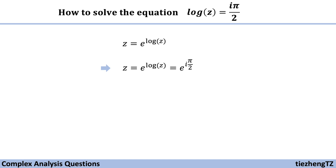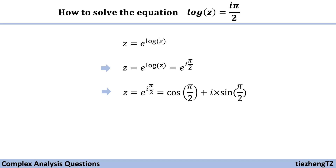So e to the power i times half pi can be written in x plus iy form. We have z equals cosine of half pi plus i times sine of half pi. Since cosine of half pi is zero and sine of half pi is one, we substitute and get z equals i.